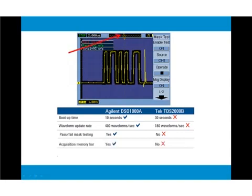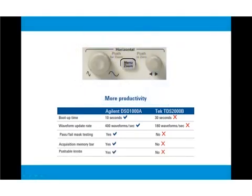The acquisition memory bar allows you to see where you are in your acquisition. Quickly change to zoom mode or zero the horizontal position with a simple push of the multifunctional knobs.